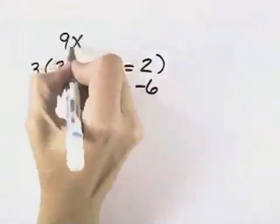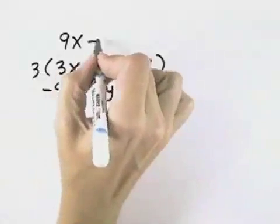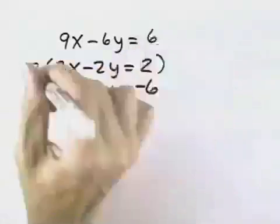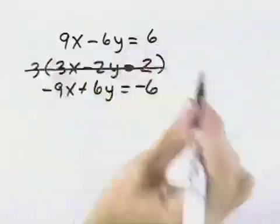So 3 times 3 is 9x. 3 times negative 2y is negative 6y equals 3 times 2, which is 6. So that will be my new first equation.